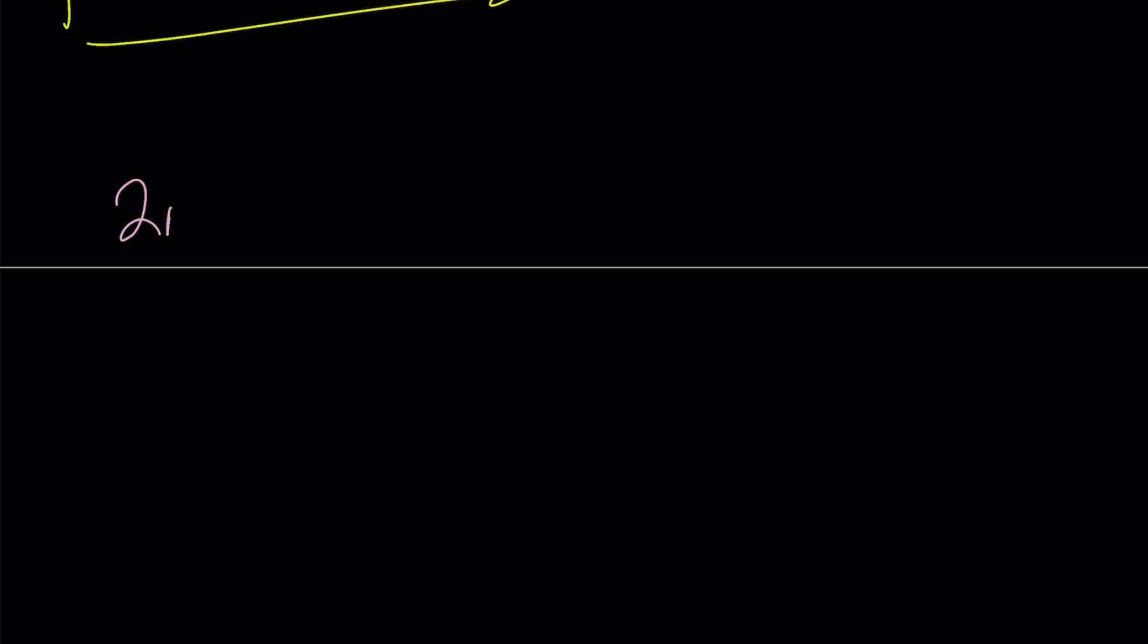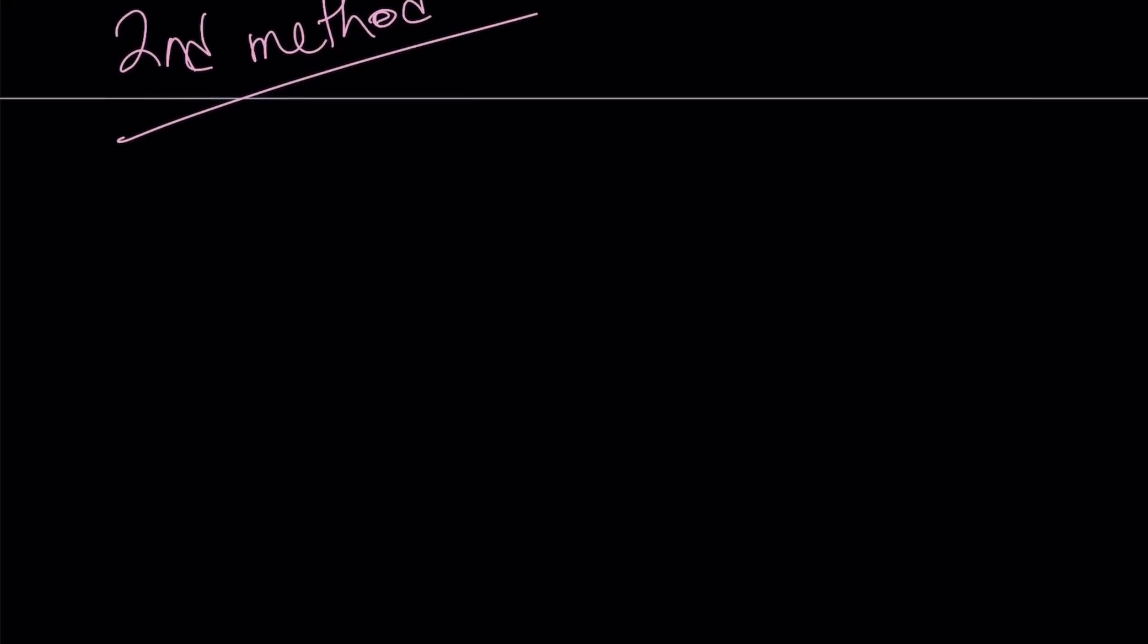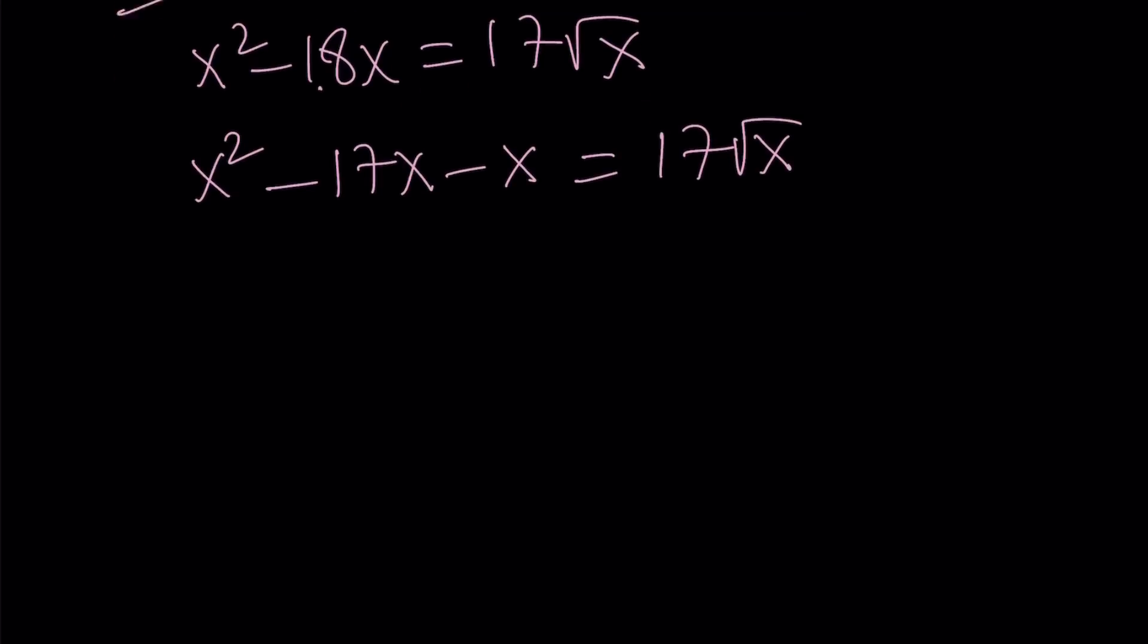Now, let's go ahead and take a look at the second method. Obviously, the second method is going to be more interesting. So we have this expression. And notice that 18 and 17 are 1 apart. So I'm thinking about splitting the 18x into negative 17x plus negative x. And this kind of allows me to do factoring.